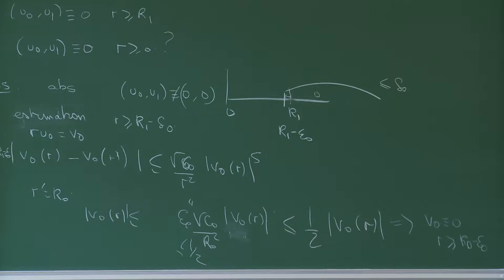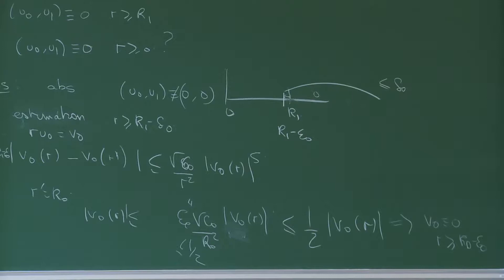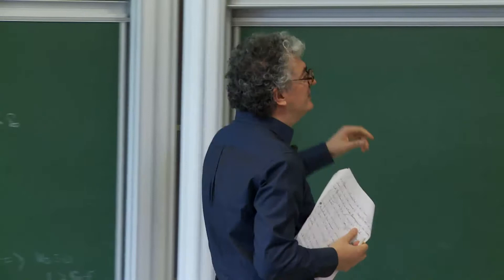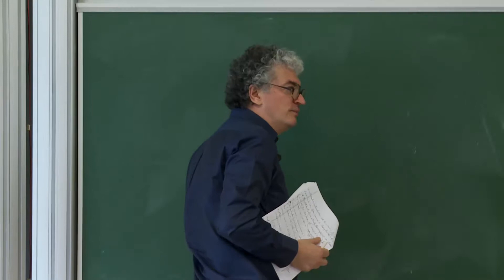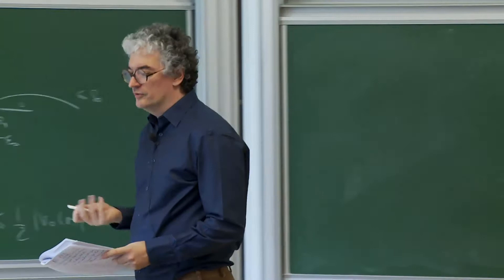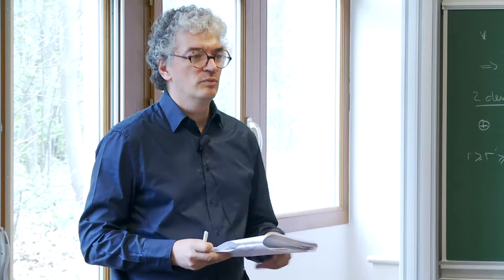Ça, c'est le premier type de démonstration, en utilisant les estimations ponctuelles obtenues précédemment. L'ennui de ces démonstrations très courtes, c'est qu'on ne voit pas exactement le principe pourquoi c'est vrai. Je vais vous faire une autre démonstration qui est plus intuitive, et qui est la bonne dans le sens où on va généraliser et utiliser ce principe dans la suite.